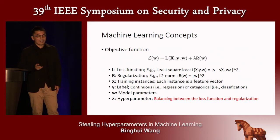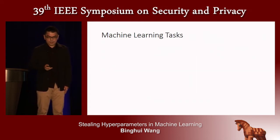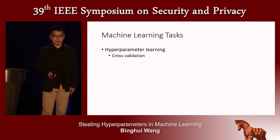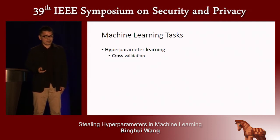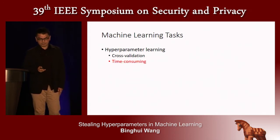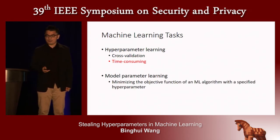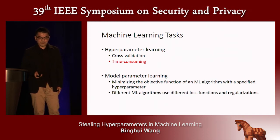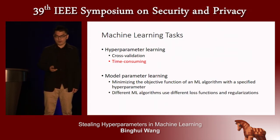Moreover, this can be generalized to multiple hyperparameters. Given the objective function, machine learning has two tasks. The first is hyperparameter learning, typically using cross-validation, which is time-consuming. The second is model parameter learning: minimizing the objective function with a given hyperparameter. Different machine learning algorithms use different loss functions and regularizations.